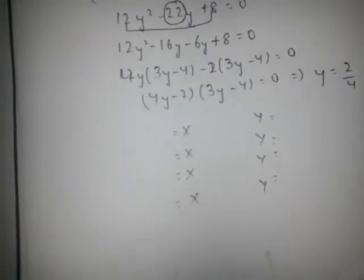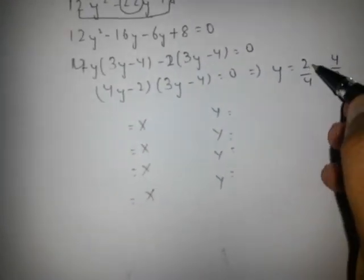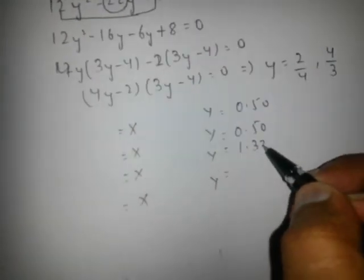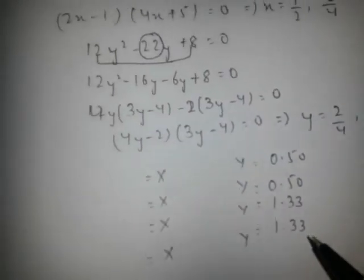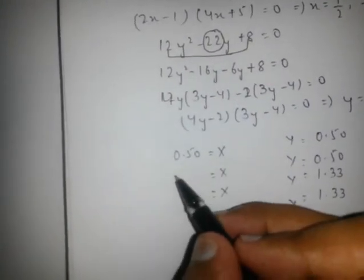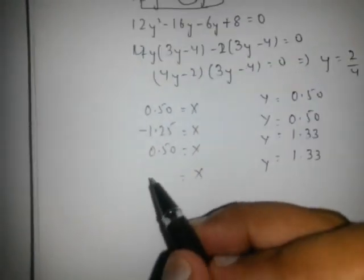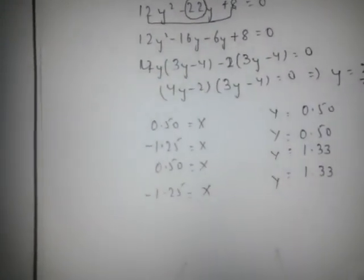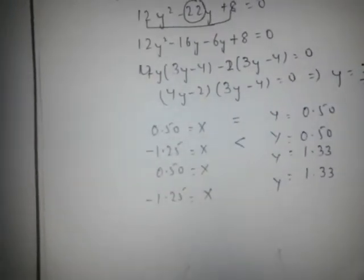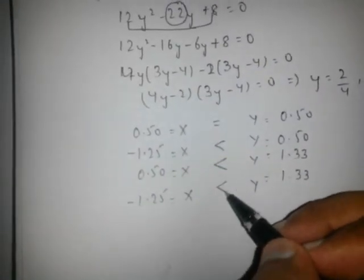If the value comes out in fraction form, convert it to decimal form. We have Y values: 0.50 and −1.333. The corresponding X values are 0.50 and −1.25. Create a relation — in this case Y is equal to X (0.50 = 0.50); in this case Y is greater than X (−1.333 vs −1.25); in this case also Y is greater than X.